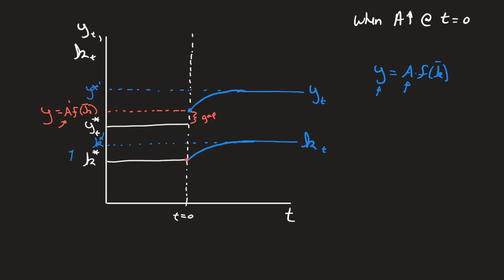This level of capital is going to be input to the new function. But that new function has a new level of a because a prime is greater than the initial level of a. So at the same level of capital, we see a small jump before we start to see the convergence of k take over to getting us to our new level of capital that is the steady state.